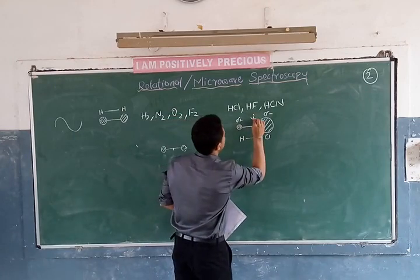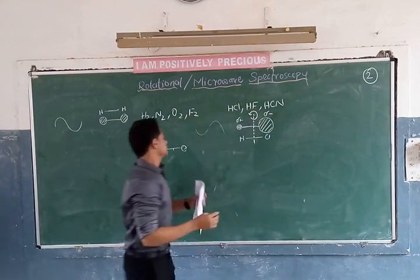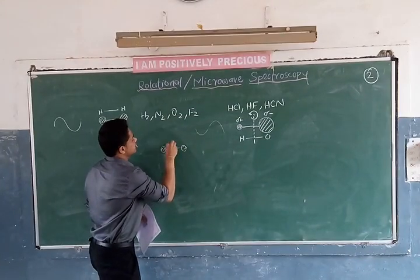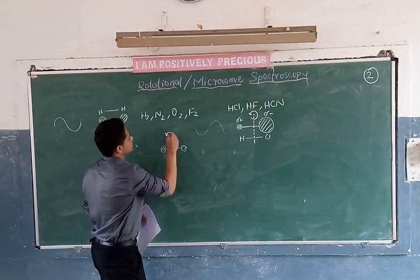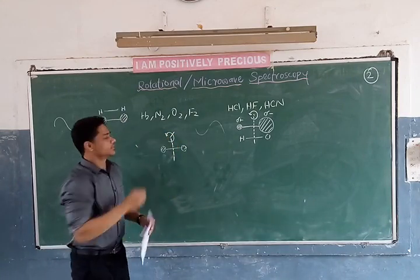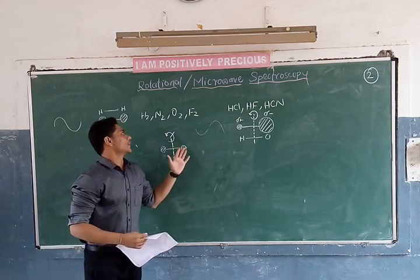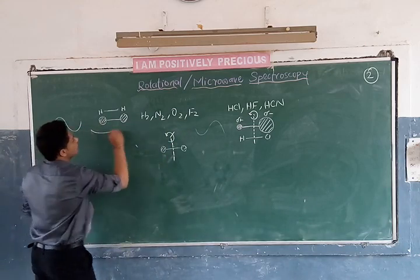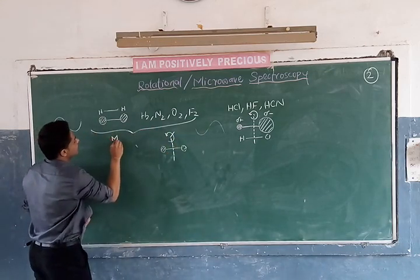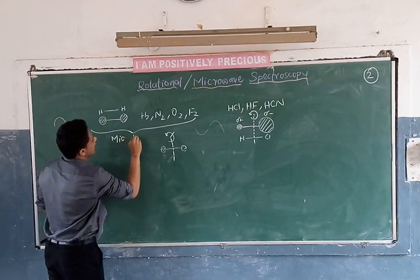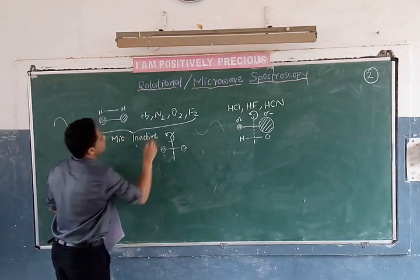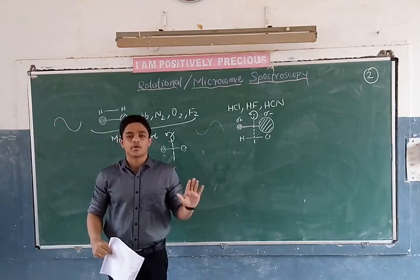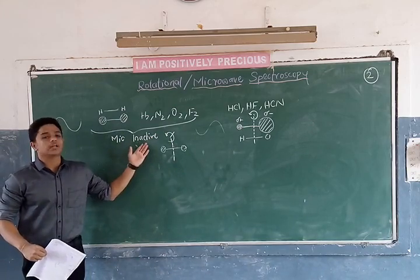When I supply this electromagnetic radiation, the atom will start rotating about this center. Whereas molecules like H2 have a center of mass but they won't rotate. So we can cancel it — they won't rotate. Hence these kinds of molecules are called microwave inactive. The molecules which have no dipole moment are not going to interact with microwaves. Such molecules are called microwave inactive.